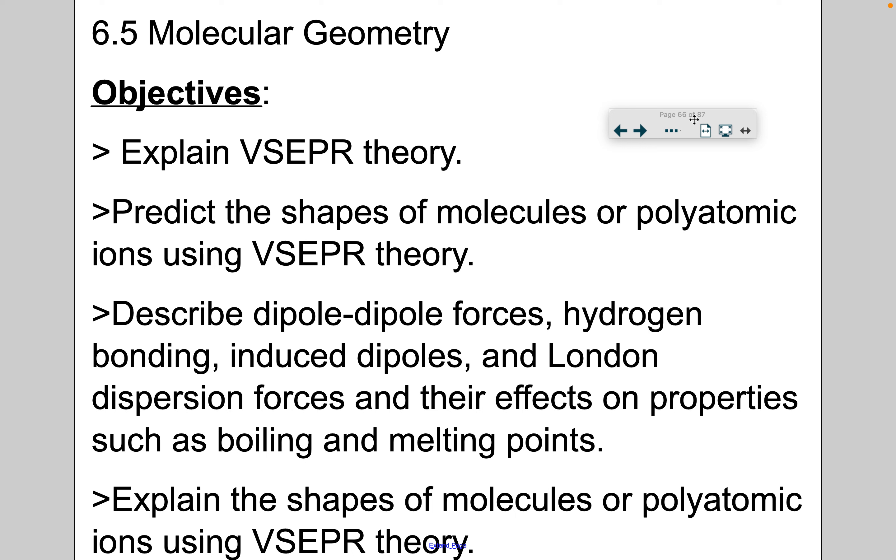All right, in this video lecture I'm going to cover 6.5 Part 1, Molecular Geometry, basically describing the shape of molecules through the VSEPR theory, which stands for valence shell electron pair repulsion. And then I'm going to give you some hints to help you predict the shapes of molecules or polyatomic ions. And then in a different lecture, I will cover some more molecular forces. But let's get to it.